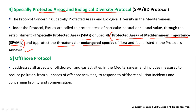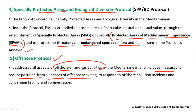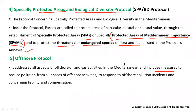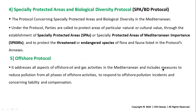Parties must also protect threatened or endangered species of flora and fauna listed in the protocol's annexes. The fifth protocol is the Offshore Protocol. It deals with any kind of offshore oil and gas activities in the Mediterranean. It includes measures to reduce pollution from all phases of offshore activities, to respond to offshore pollution incidents, and covers liability and compensation for offshore pollution incidents. The name itself tells you what it does — just remember it comes under the Barcelona Convention.